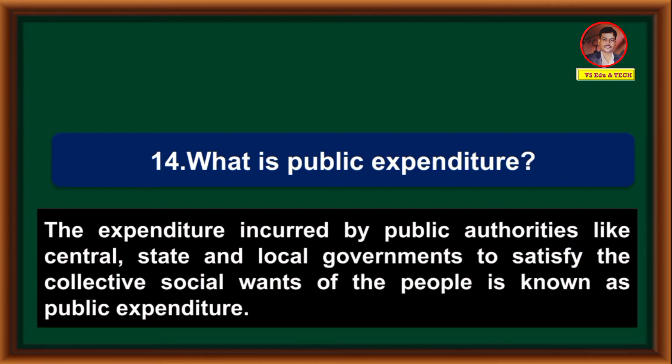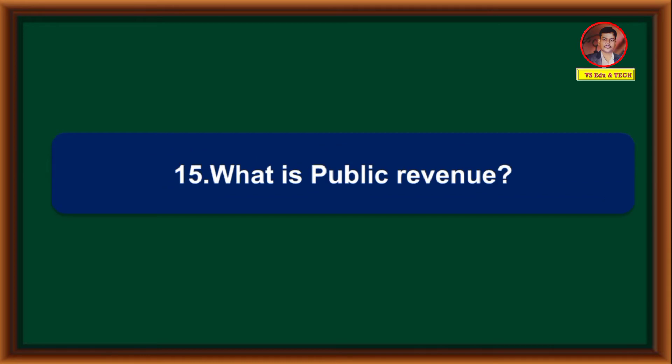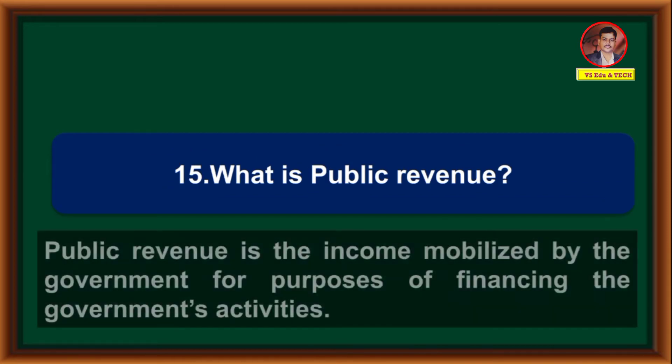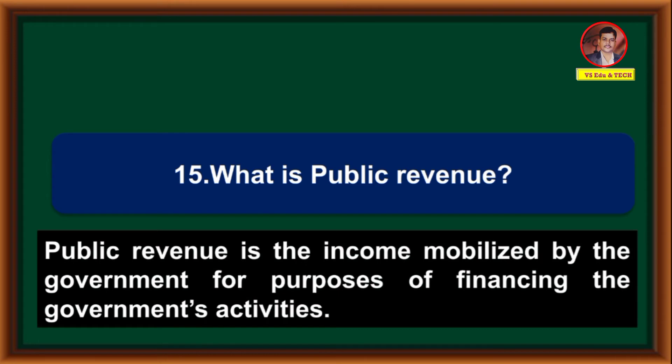What is public expenditure? The expenditure incurred by public authorities like central, state and local governments to satisfy the collective social wants of the people is known as public expenditure. What is public revenue? Public revenue is the income mobilized by the government for the purpose of financing the government's activities.